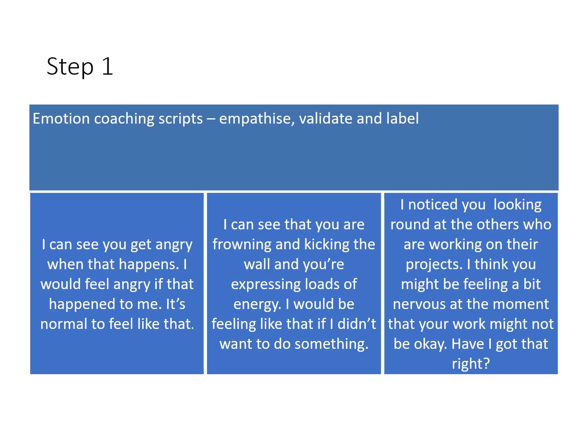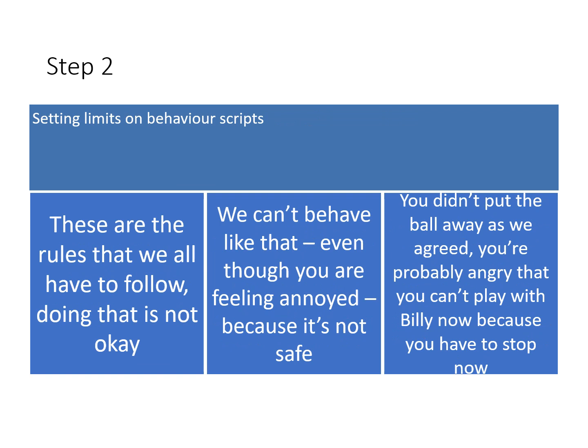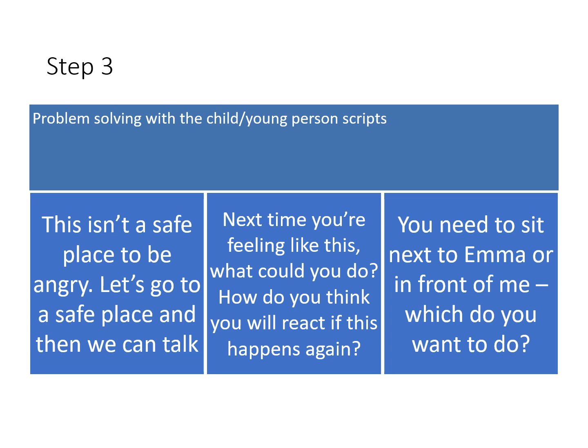Step two is setting limits on the behaviour — these are rules we all have to follow. 'That's not okay. We can't behave like that, even though you're feeling annoyed, because it's not safe.' Step three is problem-solving with the child: 'Next time you're feeling like this, what could you do? How do you think you would react if this happens again — would you like to sit next to Emma or in front of me? Which do you want?' You give a limited choice — helping them problem-solve and sort the situation out.